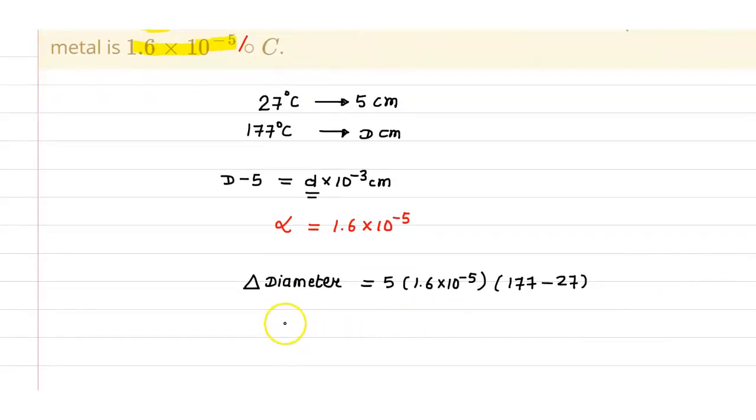Alpha is 1.6 into 10 raised to power minus 5 into change in temperature. So here, change in temperature is 177 minus 27. Now, if we calculate this, we will calculate the change in diameter and the change in diameter is d into 10 raised to power minus 3 cm. So, this will be equal to 1200 into 10 raised to power minus 5.